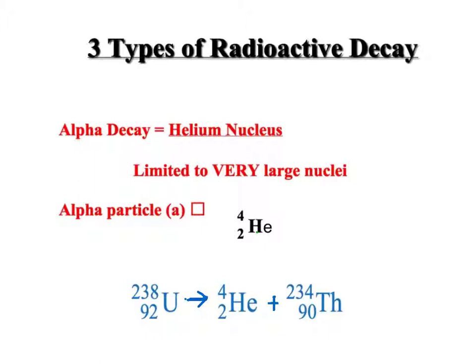The first type is alpha decay. This only happens with really large elements like uranium, and what comes out of the nucleus is essentially a helium nucleus made up of two neutrons and two protons having a total mass of four. This is called the alpha particle.